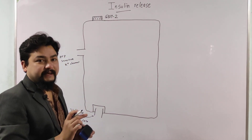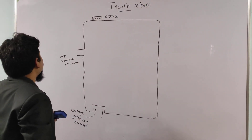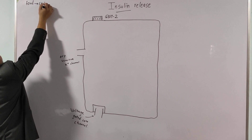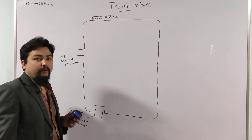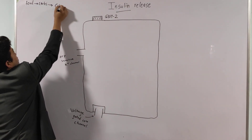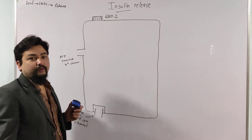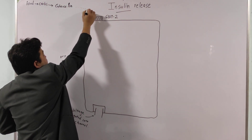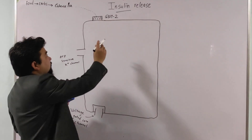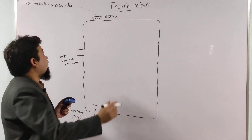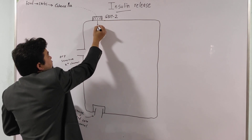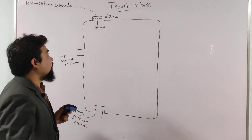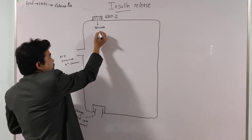Now let's talk about what happens when glucose comes to the beta cell. Suppose we consume food in the form of carbohydrates. The carbohydrate is digested in the intestine to give glucose. This glucose gets absorbed into the circulation, and when the concentration of glucose increases in circulation, it comes to the beta cell. In the beta cell, there is the glucose transporter GLUT2, which carries the glucose inside the beta cell.